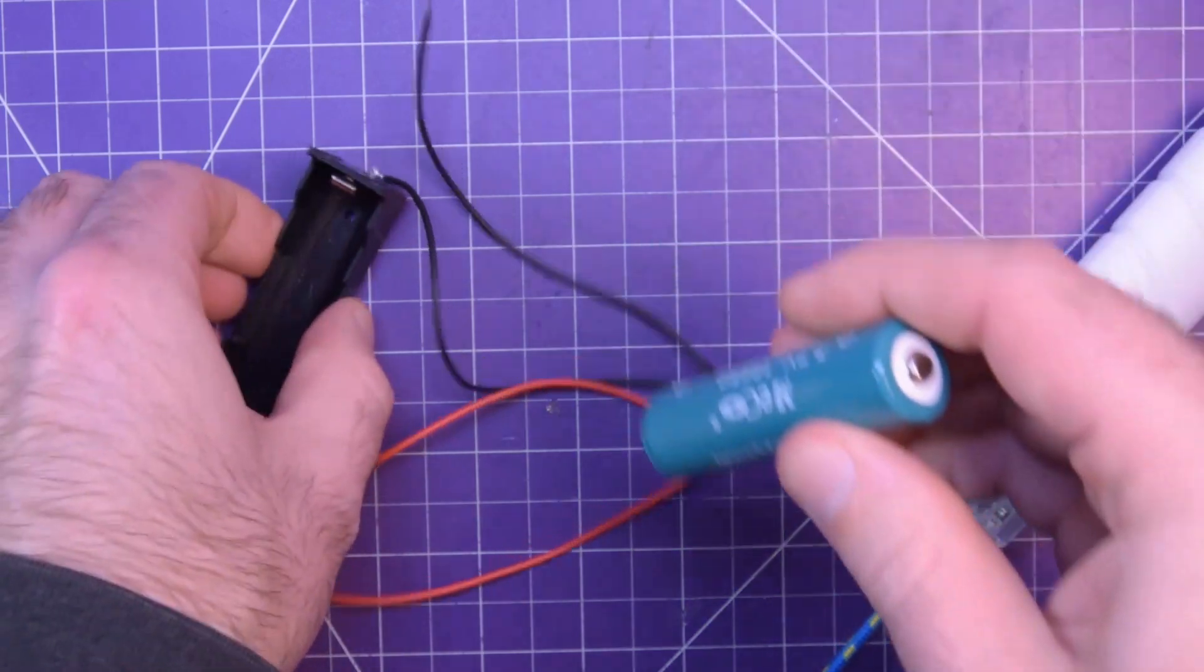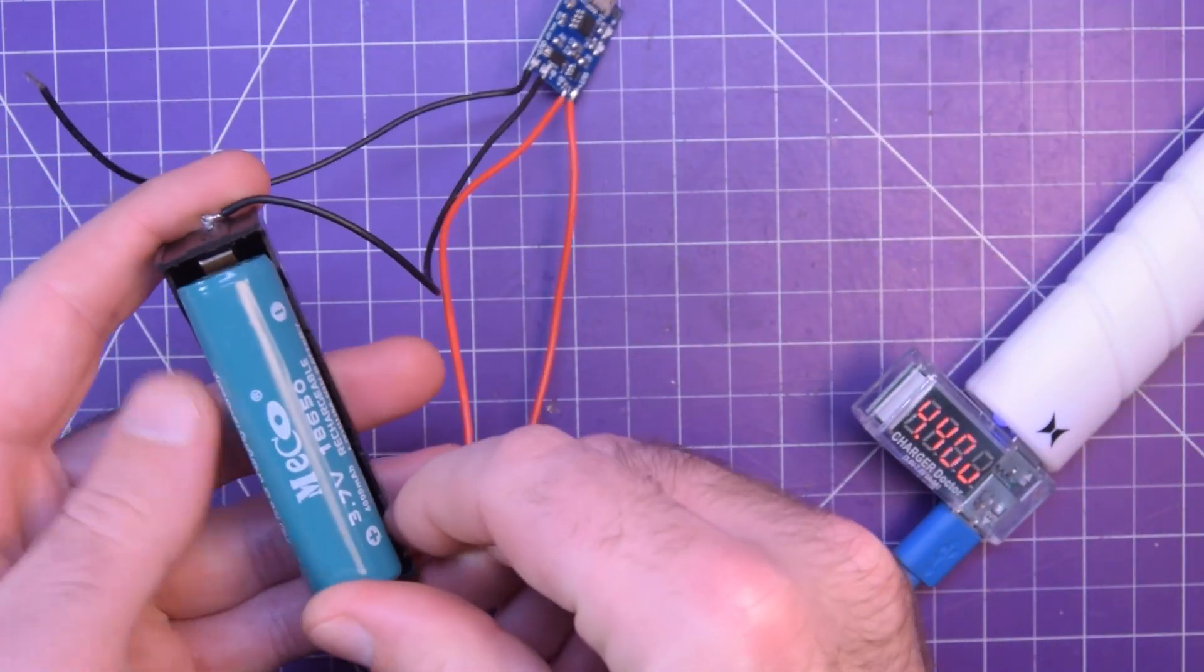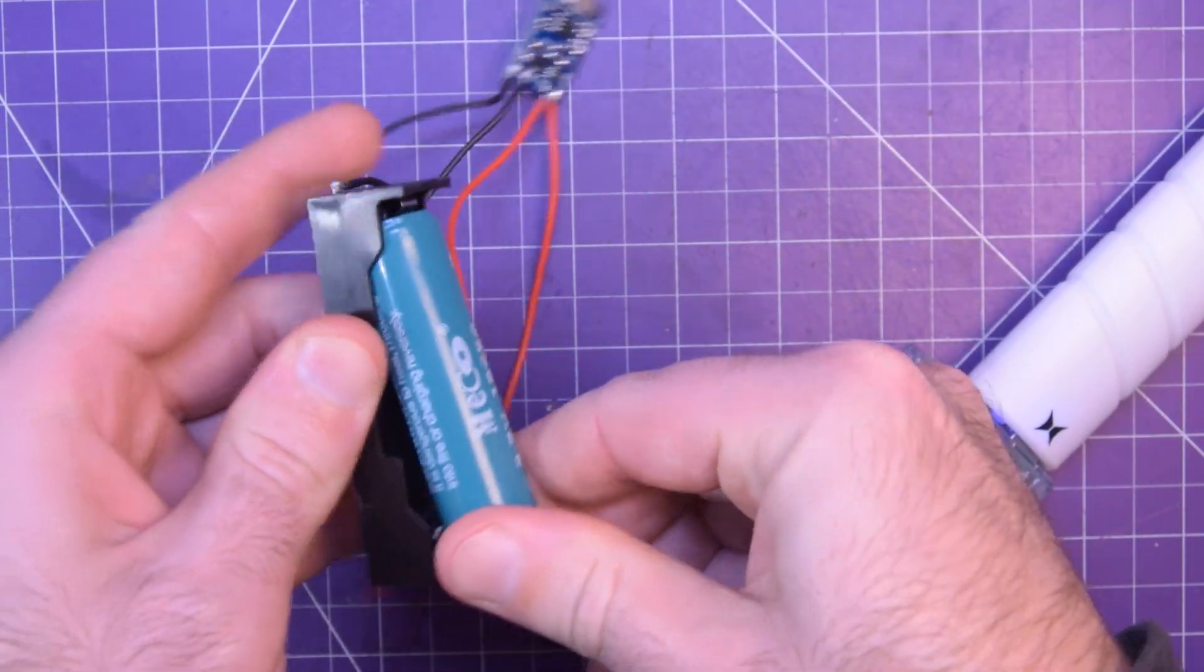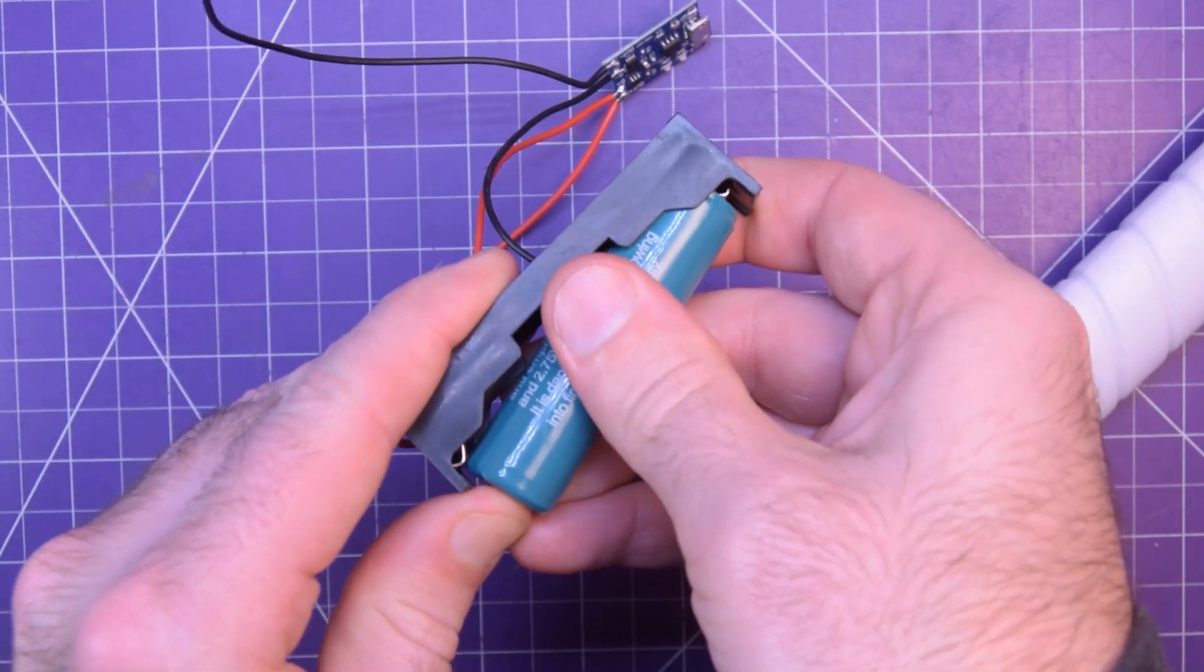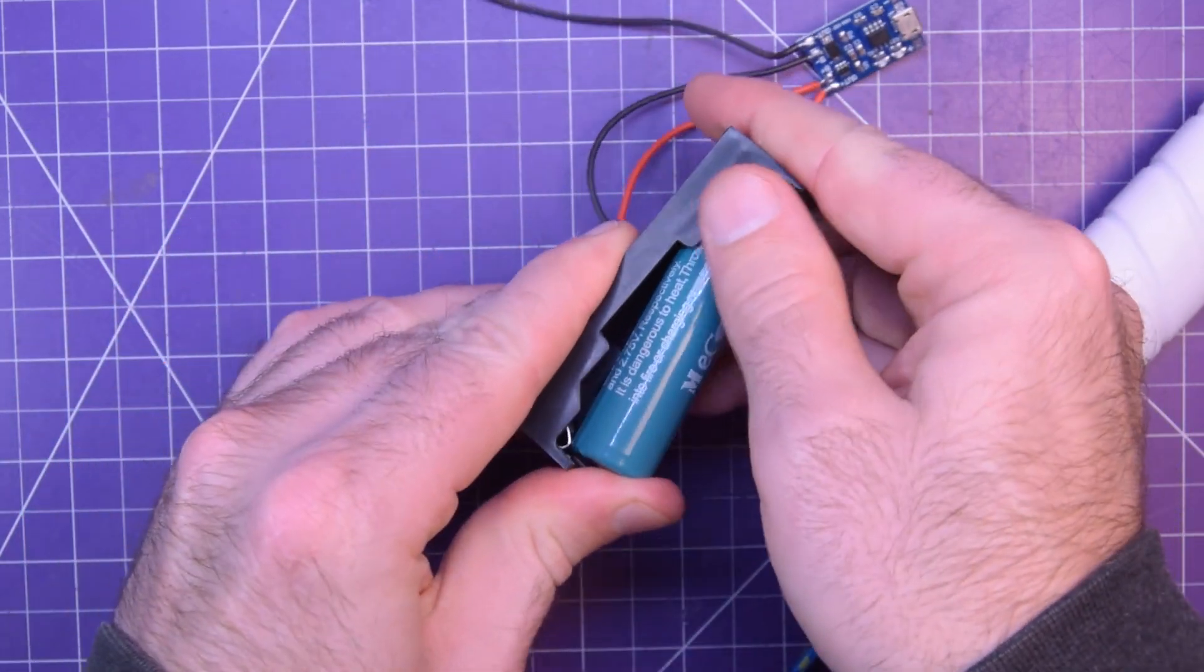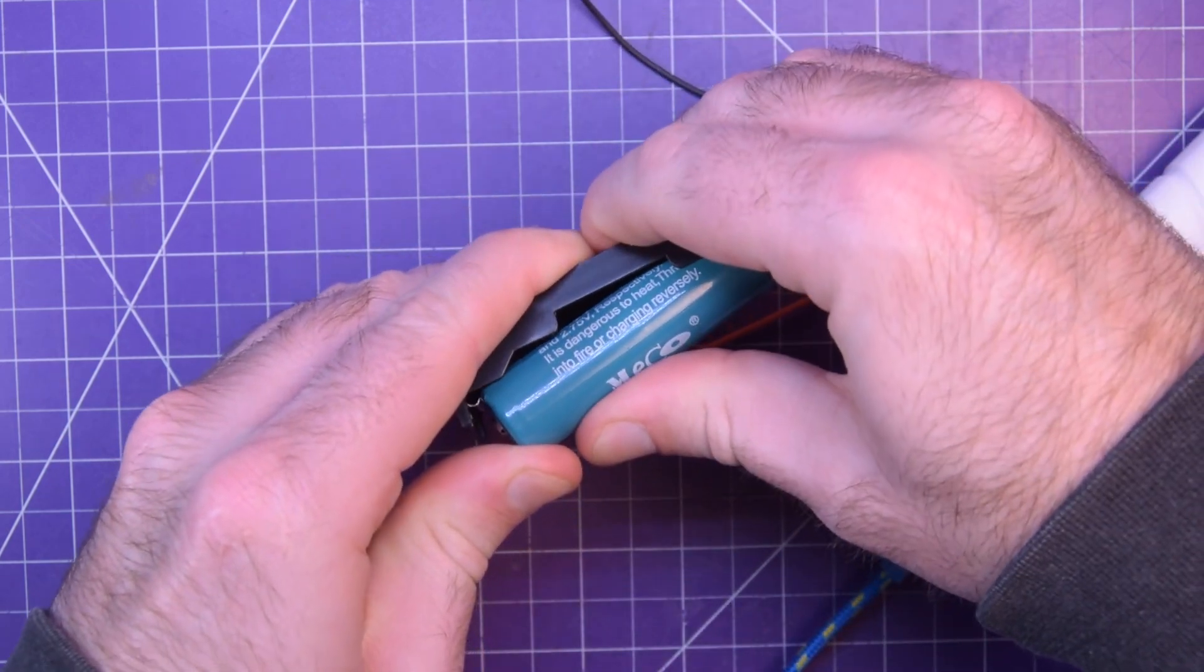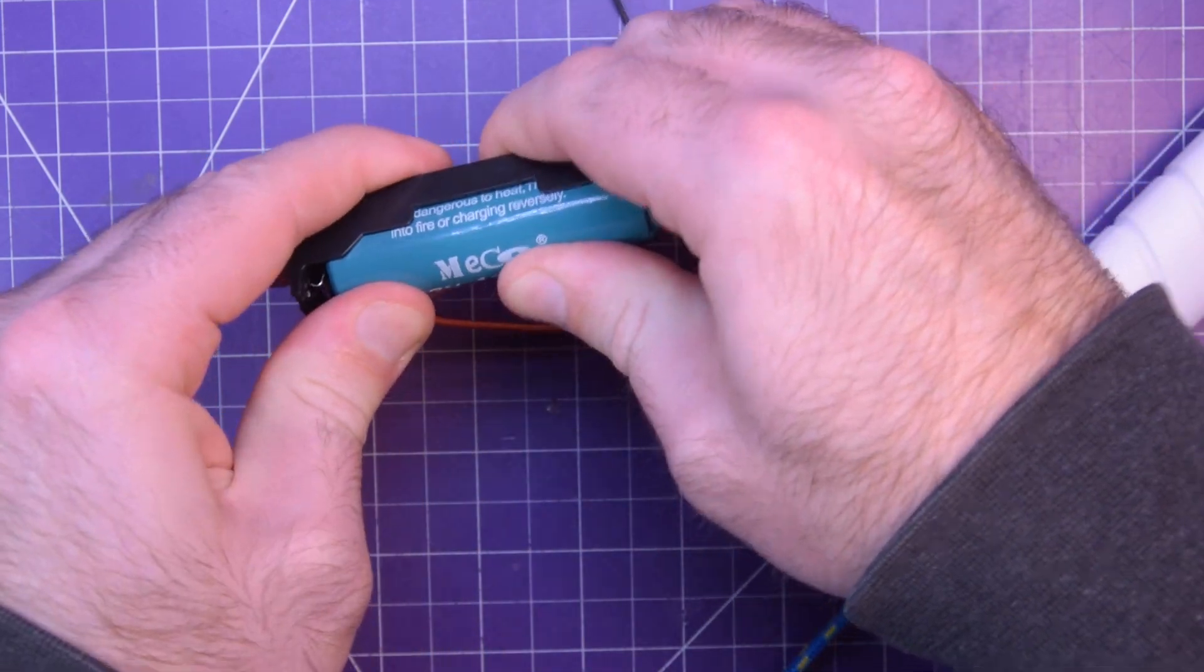Also, these protected cells are quite a bit longer than a regular 18650, so I may not be able to squeeze it in there. Well, it did. I may not be able to get it out after.